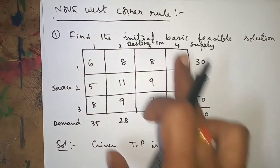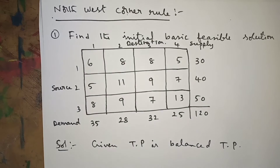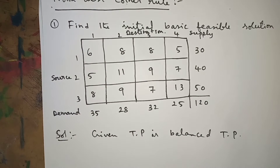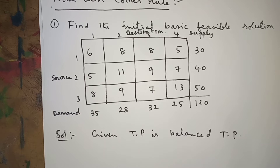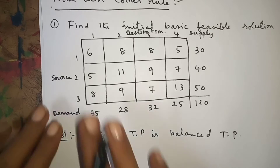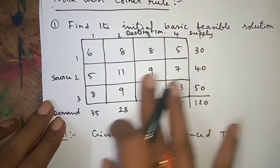By observing the given problem we can find whether it is balanced or unbalanced. If it is balanced, then only we can start directly. If it is unbalanced, we have to convert it into a balanced one and then start. Now let's look at the procedure of the Northwest Corner Rule.